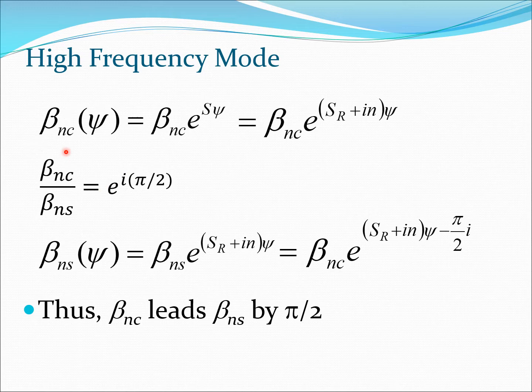Let's start with the equation for beta NC. Now beta NC can be expressed in terms of e to the power S psi, which can then be expressed as e to the power SR plus IN psi.